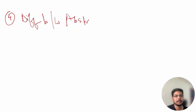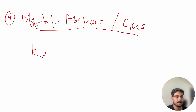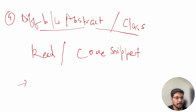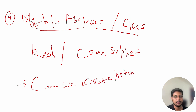The fourth question is: what is the difference between an abstract class and a normal class? Make sure you read this topic well and explain it with a code snippet. Related questions you should also prepare include: can we create an instance of an abstract class? Make sure you prepare all questions related to this topic.